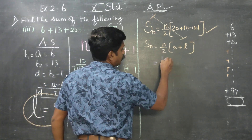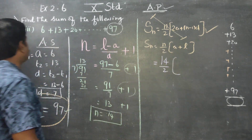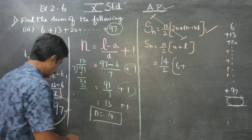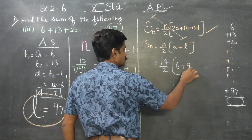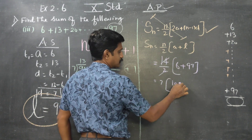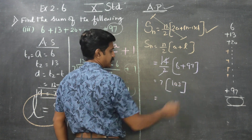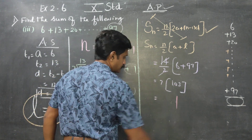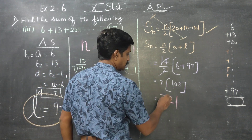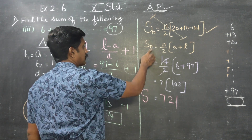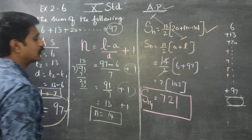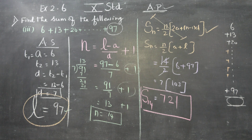n is equal to 14. So 14 by 2, with a = 6 and l = 97. Using Sn = n/2 (a + l): 14 by 2 into (6 plus 97) = 7 into 103 = 721. The final answer is 721.